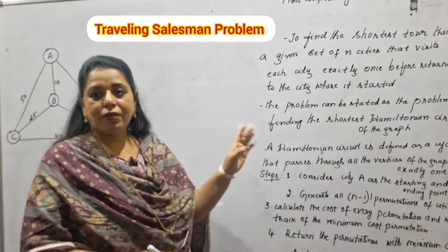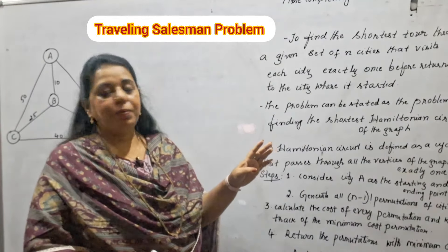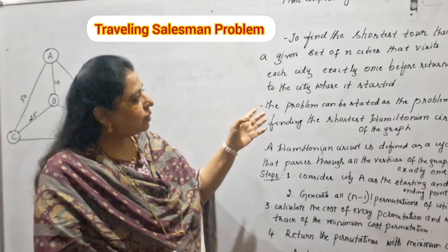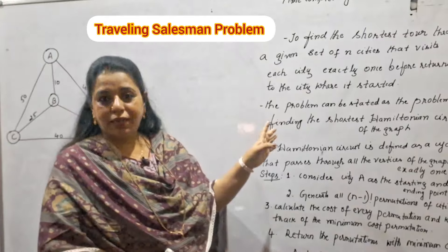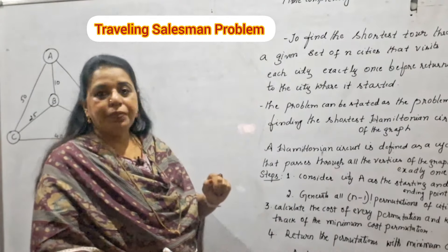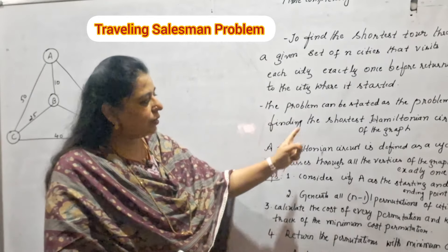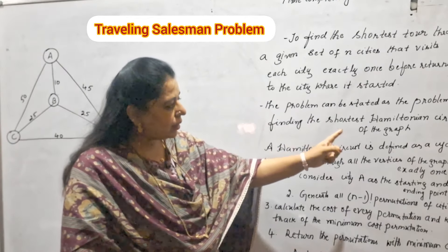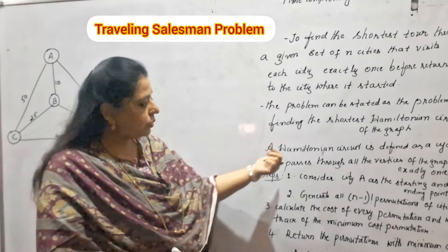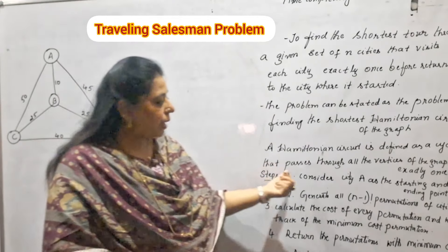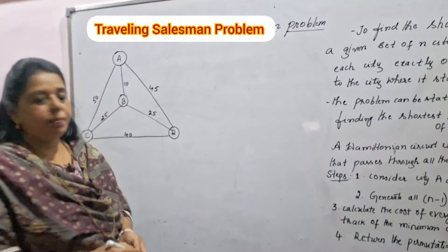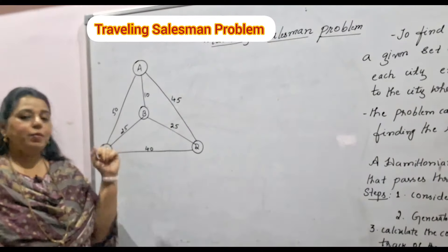The Traveling Salesman Problem is used to find the shortest tour through a given set of n cities that visits each city exactly once before returning to the city where it started. The problem can be stated as finding the shortest Hamiltonian circuit of the graph. A Hamiltonian circuit is defined as a cycle that passes through all the vertices of the graph exactly once.